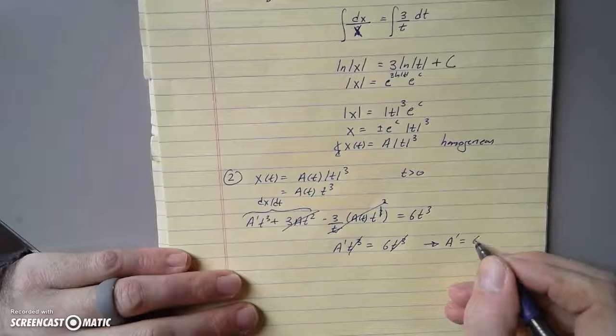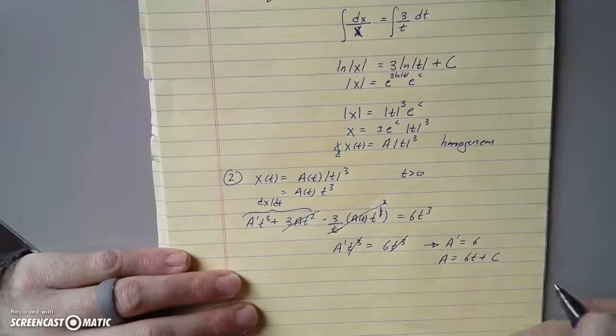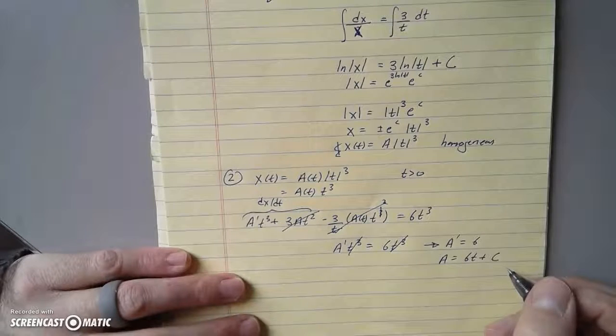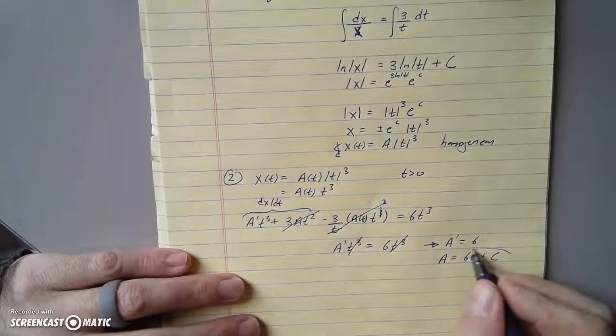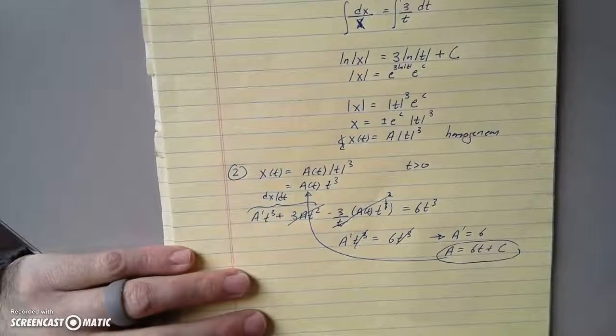a' is 6, so a is 6t + c. I'm just recycling that letter. So what is this for? This is part of our supposition.